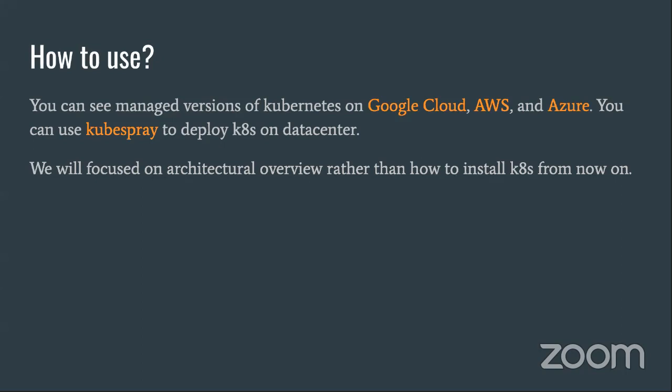Kubernetes is an open-source platform for managing containerized workloads and services — whatever we implement in our system, they are all containers. If you decide to use Kubernetes, you can use a managed version of that in Google Cloud, AWS, Azure, DigitalOcean, and other cloud providers. And also, if you have an on-prem environment, you can use KubeSpray or related technologies to deploy Kubernetes in your data center.